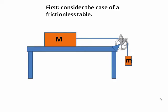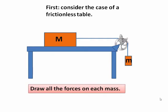The large mass we'll call big M, the little mass, little m. Now, the first thing we need to do is draw the forces acting on each mass.